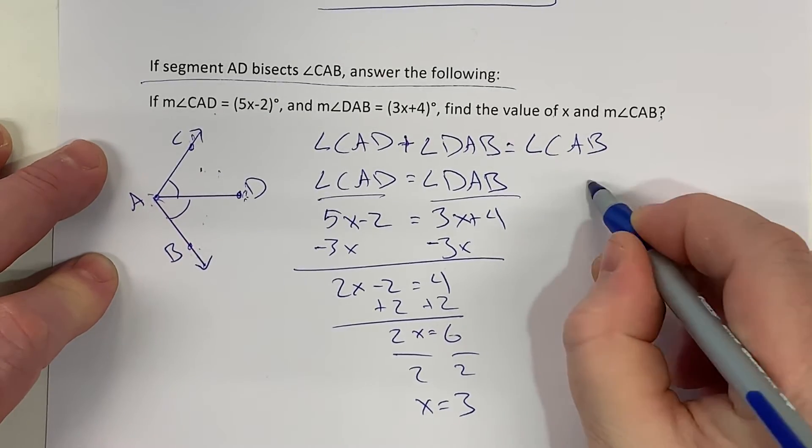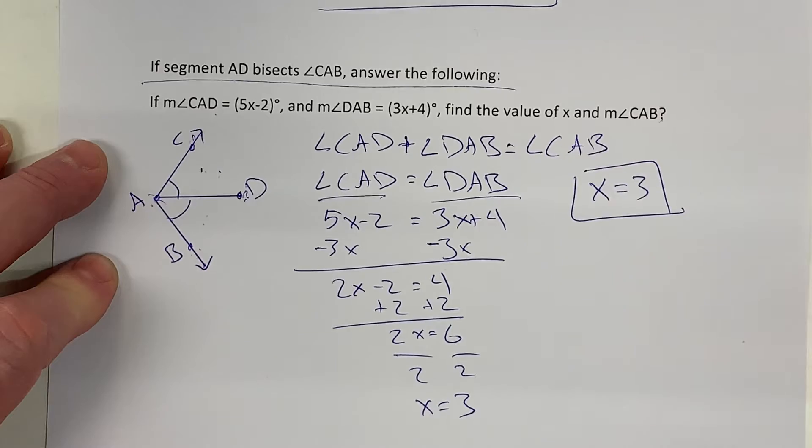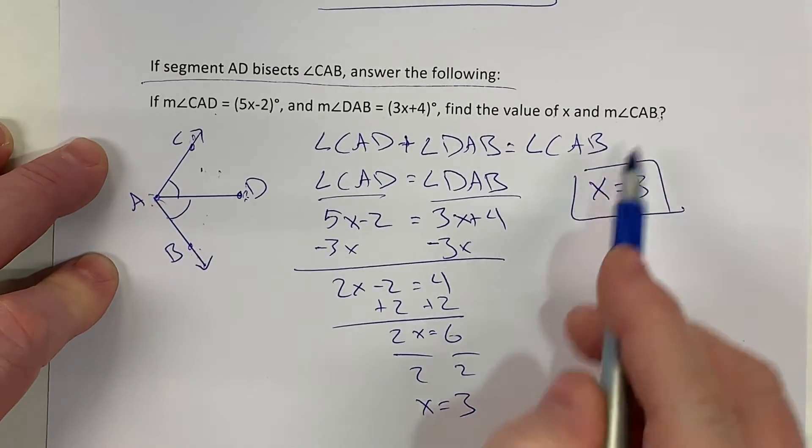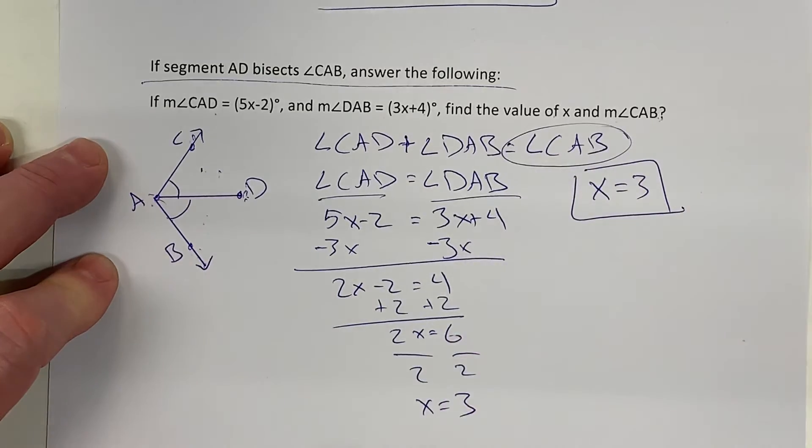So I know the value for x. That's part of the question. X equals 3. But another part of the question was to find the measure of angle CAB.